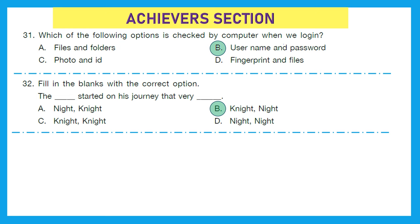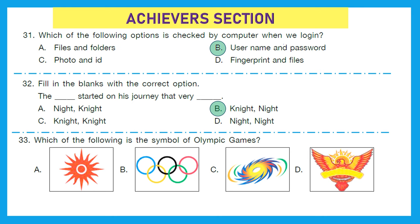Question 33: Which of the following is the symbol of the Olympic Games? The right answer is five rings — that is option B.